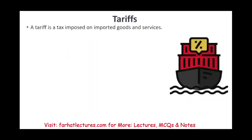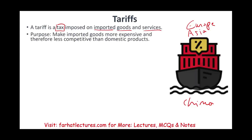What is a tariff? A tariff is a tax — basically, you're imposing a tax. It's called a tariff because it's a tax imposed specifically on imported goods and services. For example, in the US we buy goods from Europe, Asia, or China. The government would say: you can bring those goods, but we're going to impose a tariff. The main purpose of a tariff is to make imported goods more expensive, and therefore less competitive compared to domestic products.